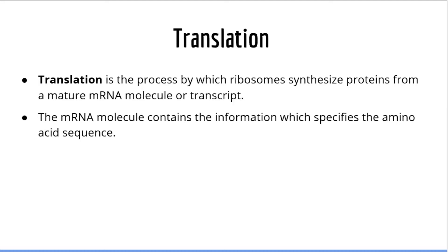Translation is the process by which ribosomes synthesize proteins from a mature mRNA molecule. The mRNA molecule contains the information that specifies the amino acid sequence. Translation requires the actions of specialized enzymes made from RNA called ribosomes, another type of RNA called tRNAs, various proteins called initiation factors, elongation factors, and termination factors. This process also requires energy from ATP and amino acids.